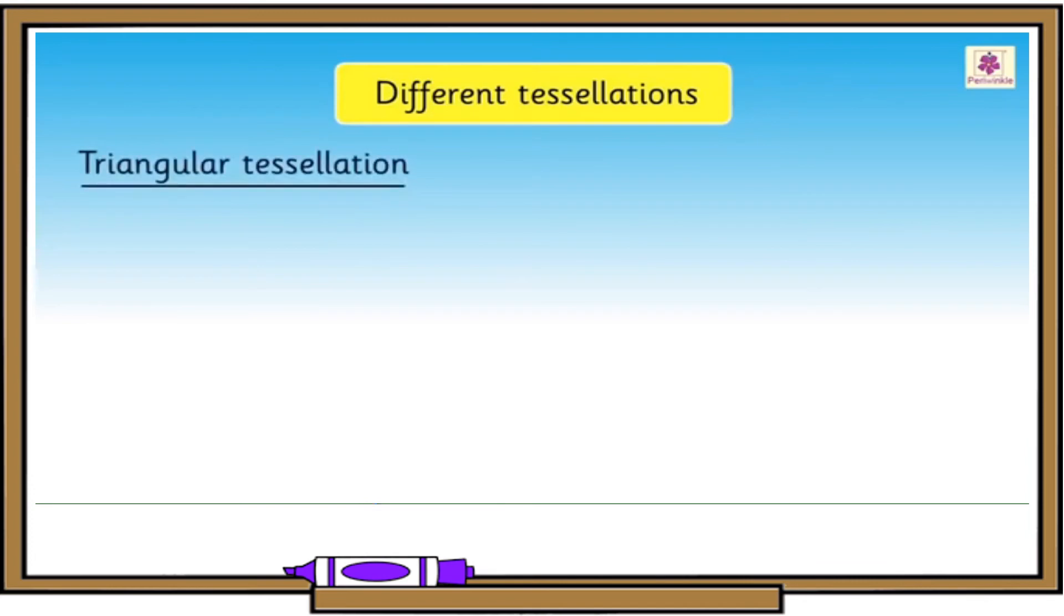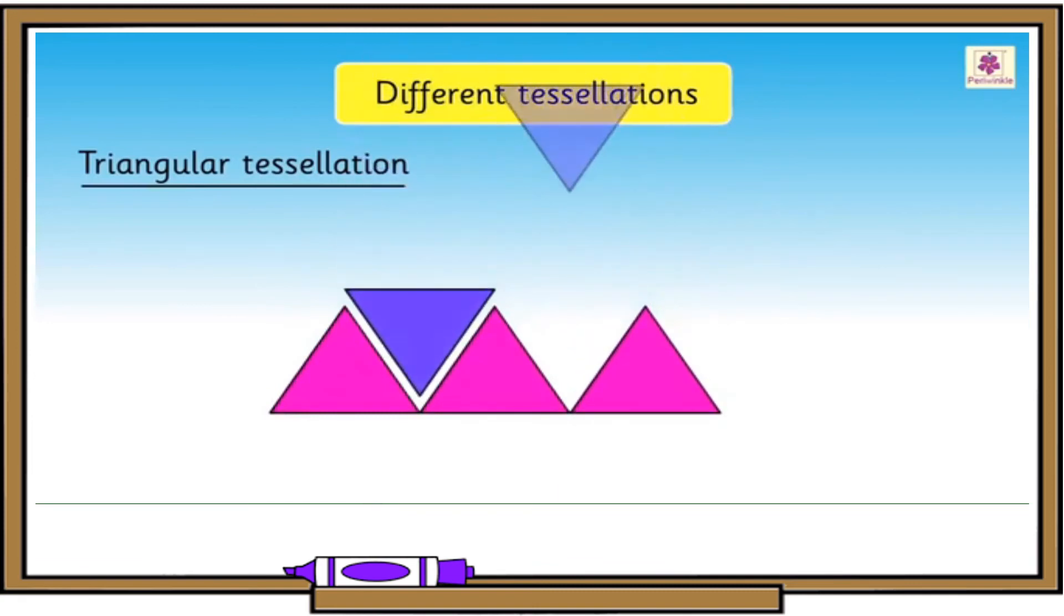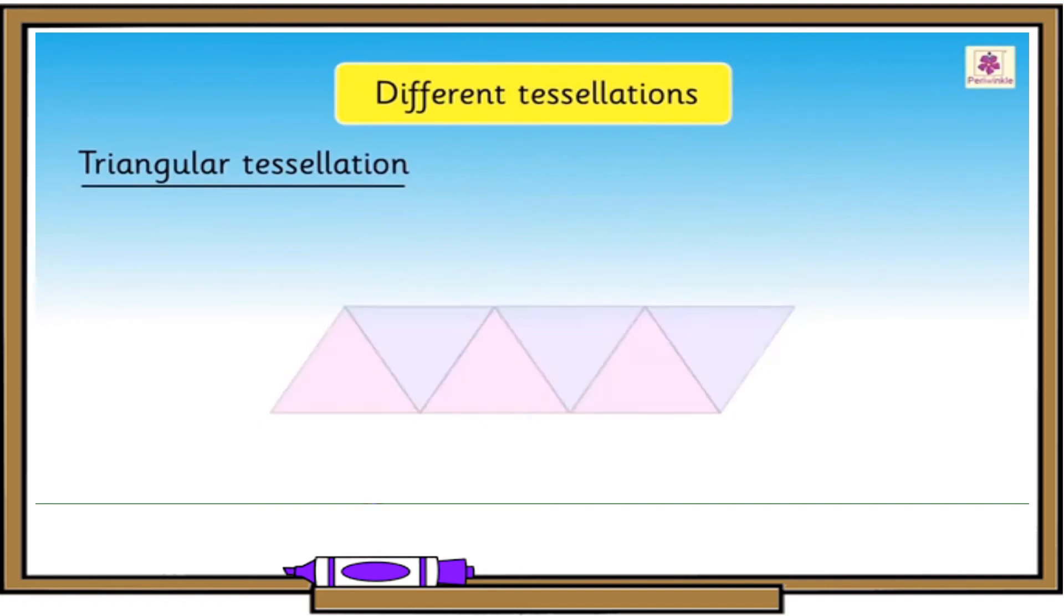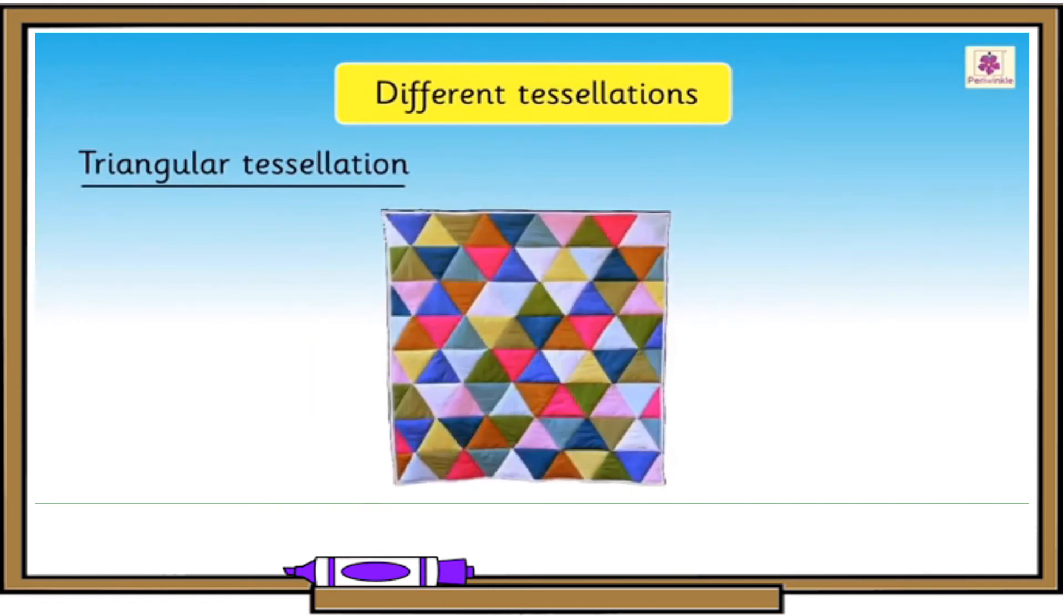Now, let us study different tessellations. Triangular tessellation is where triangles are arranged in a pattern. This quilt is a tessellation made of triangles.